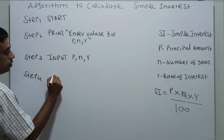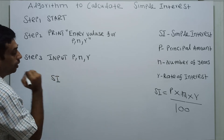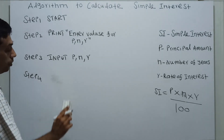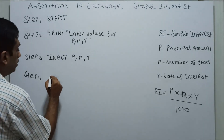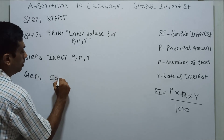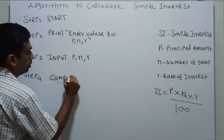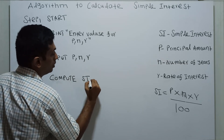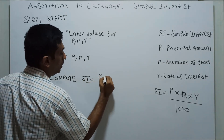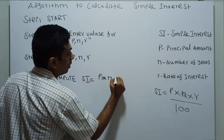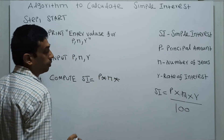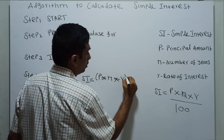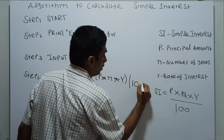Step 4: calculate simple interest. Compute simple interest equal to P star N star R — that is, principal amount into rate of interest — divided by 100.